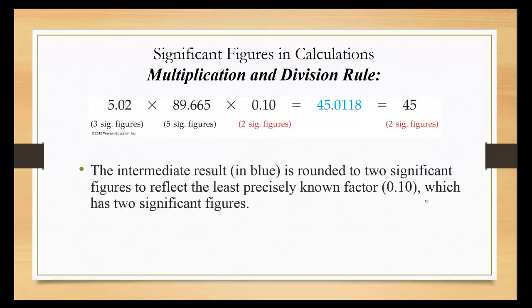Let's do another one. 5.02 times 89.665 times 0.10. If I multiply those three numbers together, I get 45.0118. Now I go back and I look at each of the numbers individually. I have three significant figures here. I have five significant figures here. And I have two in the final number.